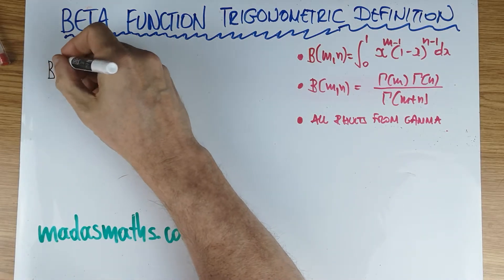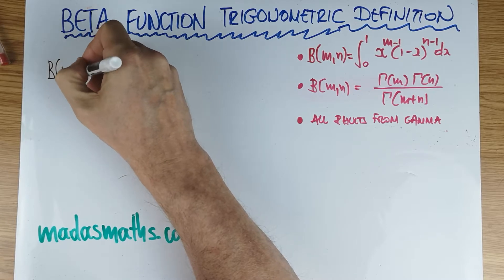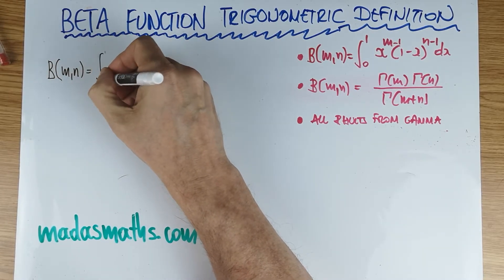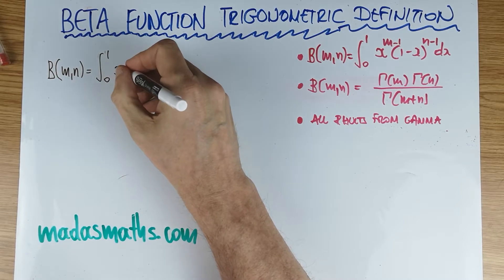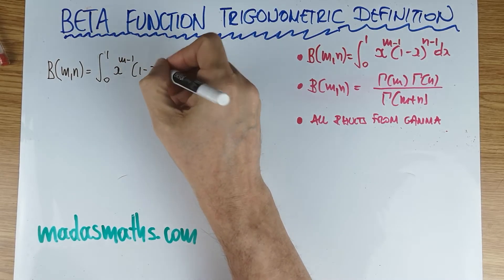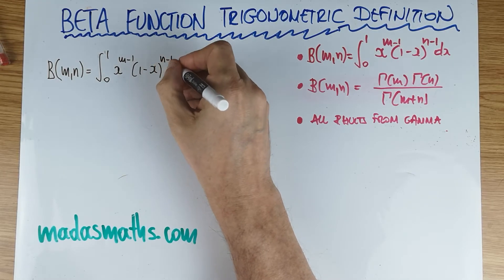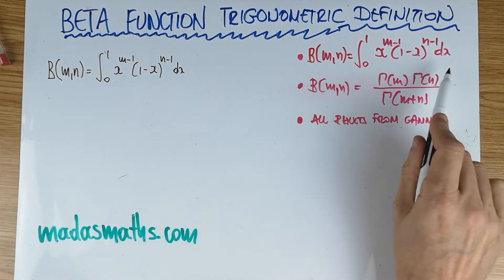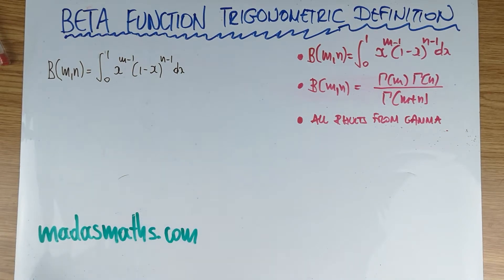This is the trigonometric definition of the beta function. We start with the beta function as we know it. Beta of m, n is defined as the integral from 0 to 1, x to the power of m minus 1, 1 minus x to the power of n minus 1 dx. That's how the beta function is defined.